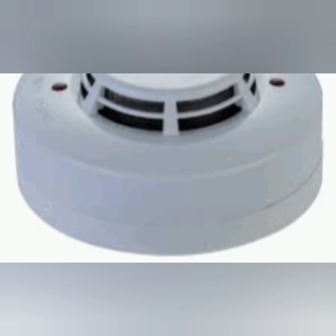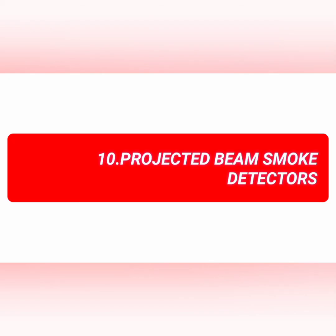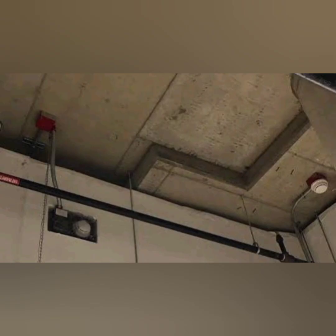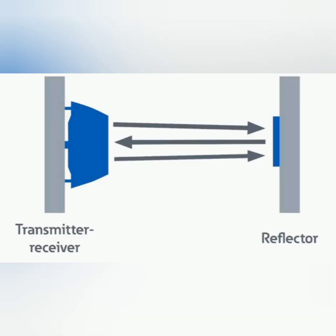The tenth device in the list is projected beam smoke detectors. For visual inspection, we need to make the initial acceptance test, and then the periodic frequency for beam smoke detectors is semi-annual. The method of visual inspection is to verify that the beam path is not obstructed.